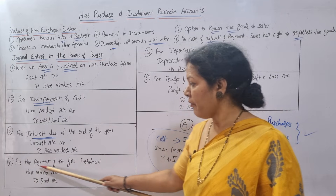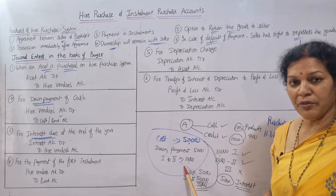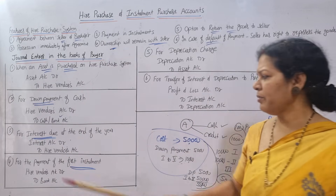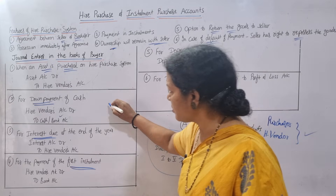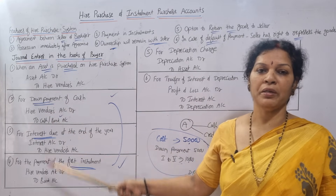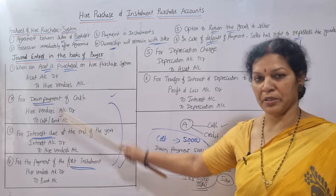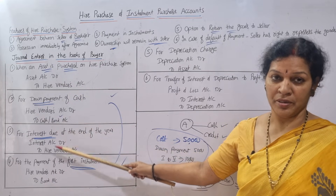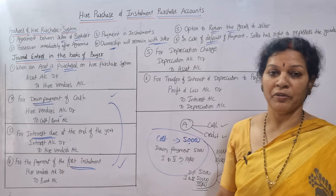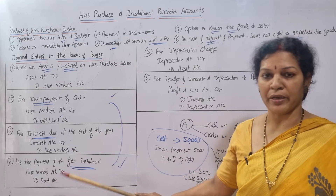Fourth entry: for payment of the first installment. Every year or every month, ten thousand rupees is paid. This entry is similar to the down payment entry — Hire Vendor's Account debit, to Bank Account credit. So the second entry and the fourth entry are essentially the same: debit the receiver, credit what goes out — Hire Vendor's Account debit, to Bank Account credit.